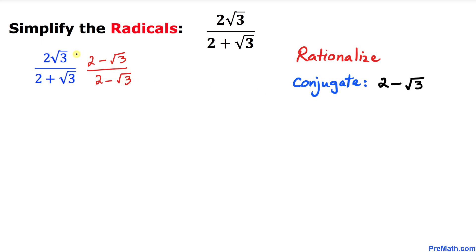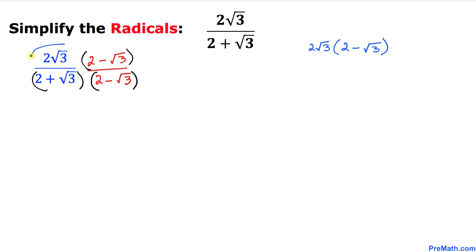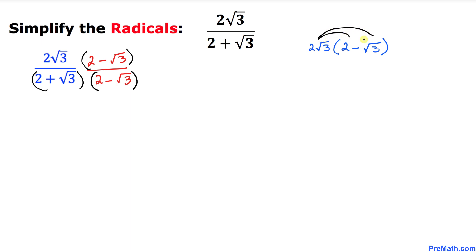Now let's multiply the numerators together, and likewise multiply the two denominators. Let's focus on the numerator part. I have copied it down here, and now let's simplify it by using the distribution property. Let's go ahead and distribute.